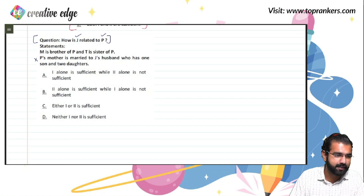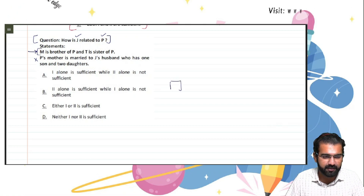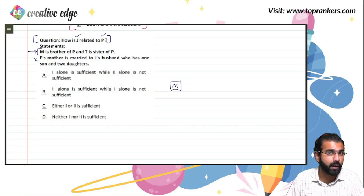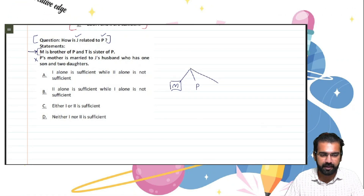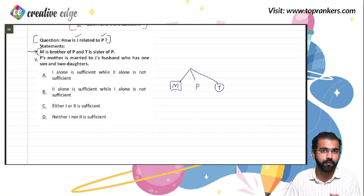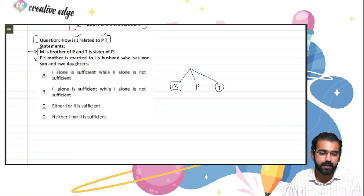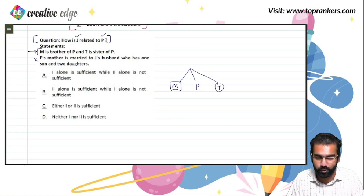My approach: I'll not look at statement 2 as of now. Statement 1 alone says: M is brother of P and T is sister of P. In blood relations, if M is brother, M has to be male. M and P are siblings. Additionally, T is sister of P — T is female. So M, P, and T are siblings. However, with statement 1 alone, I cannot draw J anywhere in this family tree, so statement 1 alone is not sufficient.